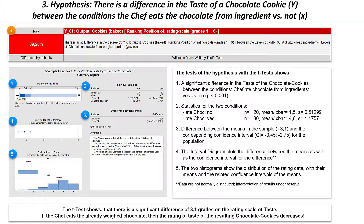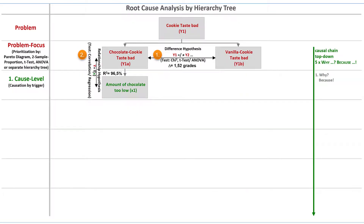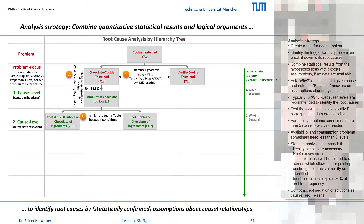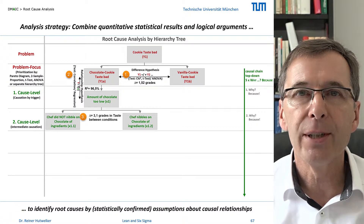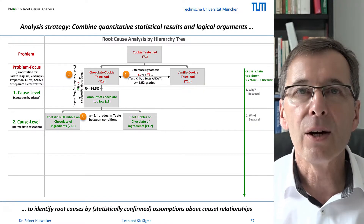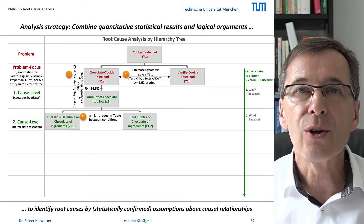The result of this difference hypothesis provides a cause for the different amount of chocolate in the cookies. Why does the amount of chocolate vary in the cookies? Because our chef nibbles chocolate from the weighed ingredients. Or vice versa, if our chef nibbles chocolate from the ingredients, then the amount of chocolate in the cookies is reduced. Since we have no data about why our chef nibbles chocolate from the ingredients, we are now again dependent on the opinion of the experts. Our next task is to combine the statistical results with considerations of the experts in a root cause analysis.